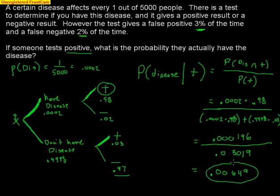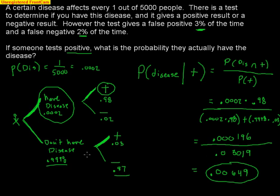That's a very low answer, and a lot of people get confused by that. They're thinking: if I have a positive result, I should have the disease — why is this so low? The reason is it's so rare to even have the disease in the first place — one out of 5,000 — so if you get a positive result, it's probably going to be a false positive. The branch where you don't have the disease and test positive — .9998 times .03 — accounts for the majority of positive results. So if you have a positive result, the probability of actually having the disease is very low: .00649. This demonstrates tree diagrams and the idea of conditional probability.